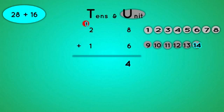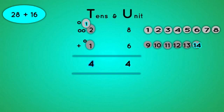So we count this one. 1, 2. And this one, 1. So for tens, we have 1, 2, 3, and 4. Here we go. We have our answer. 28 plus 16 is equal to 44.